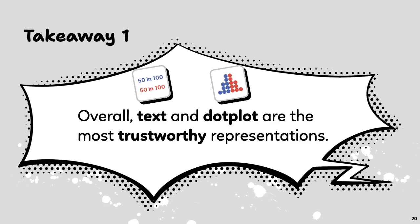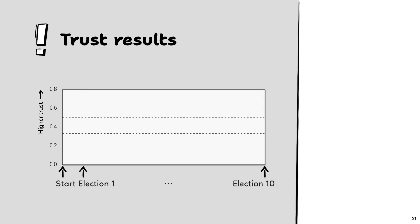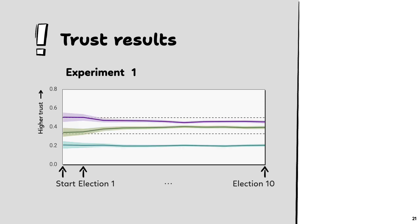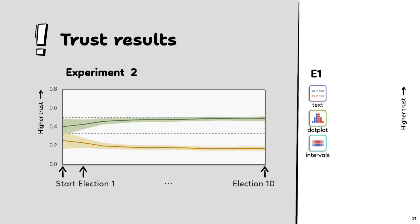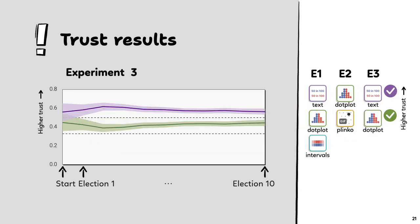Overall, text and dot plot are the most trustworthy representations. Given the sequential decision-making model, people's trust is a function of their time point in the experiment. In experiment 1, aggregating all 300 participants, trust stabilizes after two or three elections, with text and dot plot leading to a higher level of trust than intervals. Across all three experiments, the most trustworthy representations are text and dot plot.